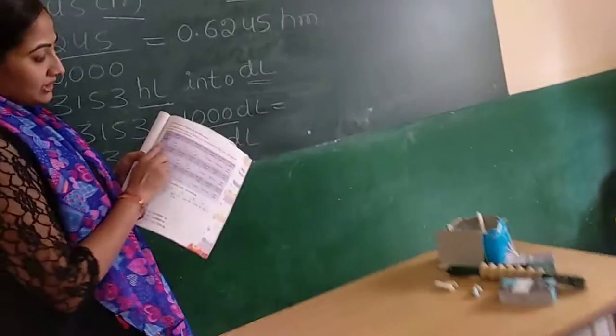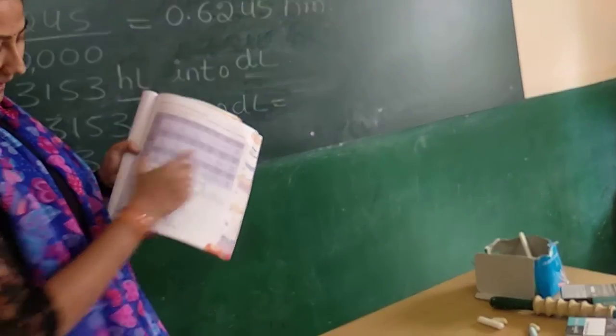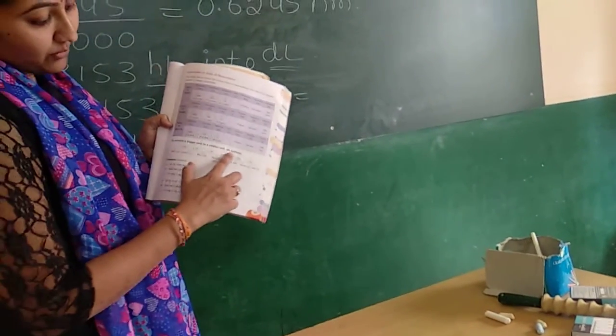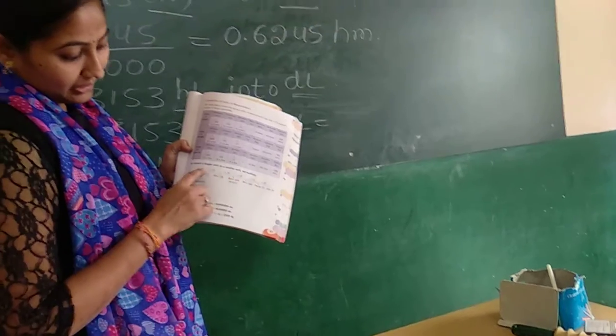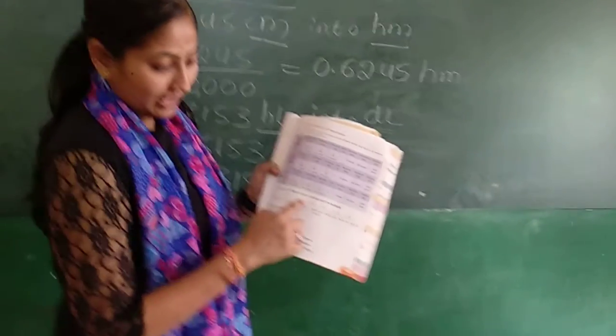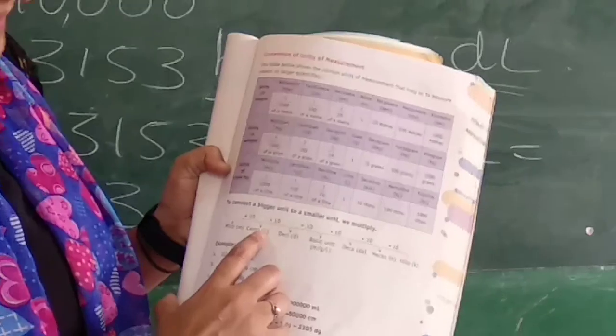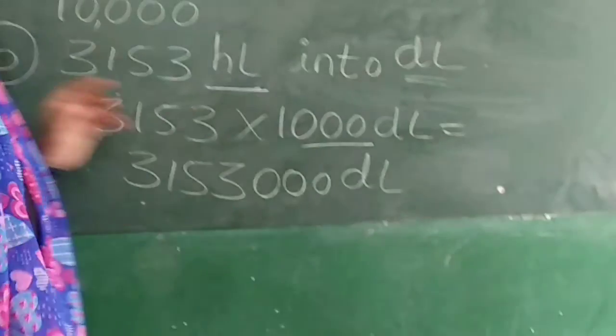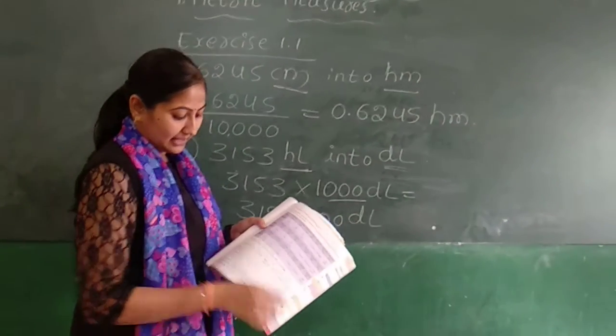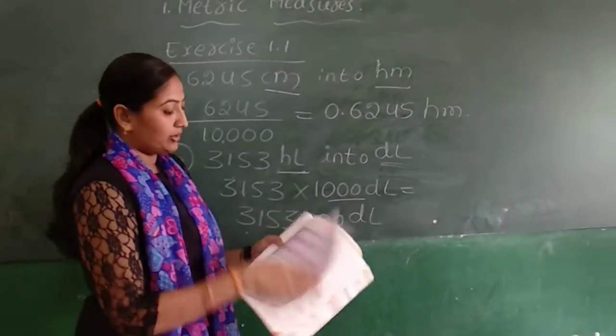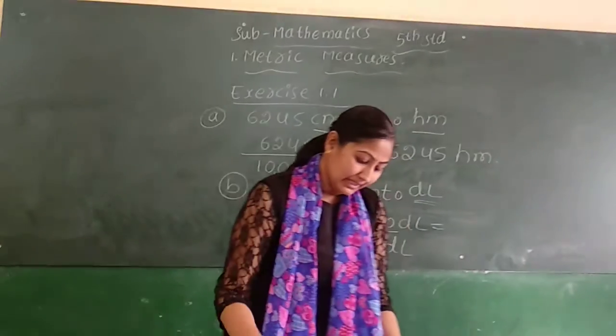This conversion of units of measurement chart is very helpful. To convert a bigger unit to a smaller unit, we multiply. For the first example, converting centimeters to hectometers, we count 4 steps and divide by 10,000. Multiply going right, divide going left. I have solved the remaining problems on the sheets.